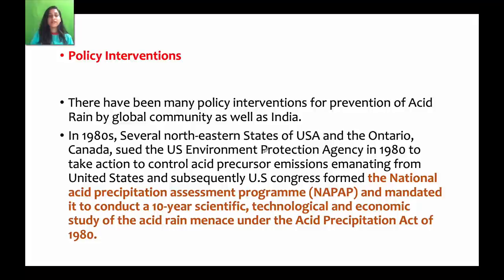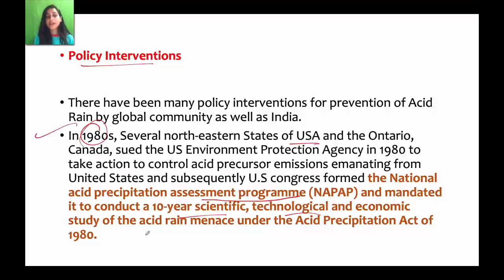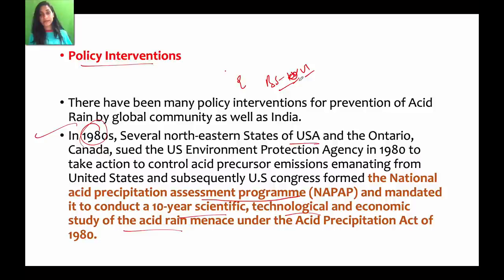Policy interventions are also key. For example, in the 1980s, the USA and Ontario started the National Acid Precipitation Assessment Program — a 10-year scientific, technological, and economic study of acid rain. In India, policies like BS-6 standards aim to reduce sulfur emissions. When government policy interventions are strong, they can make a significant difference.